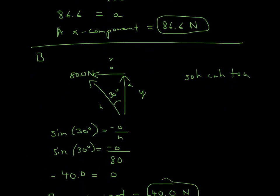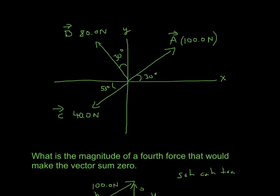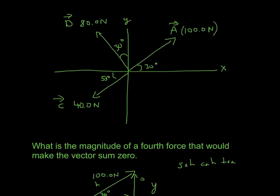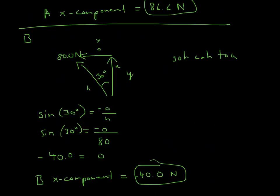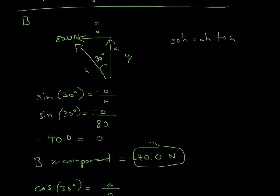Now let's go down to B. If we look at B on the graph, all I did to make this triangle was shift the x-axis up. We have the angle and 80 Newtons. So we have our triangle and we'll do some more trig.